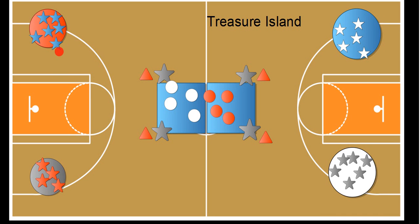Each one of these circles is a hula hoop - red hula hoop, gray hula hoop, blue and white - and they hold the treasure. These stars here are the players on this team.